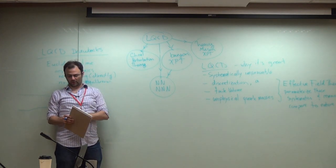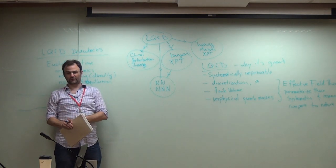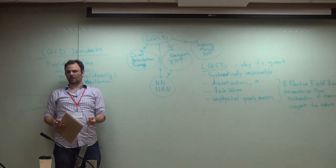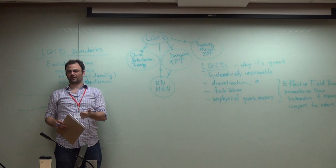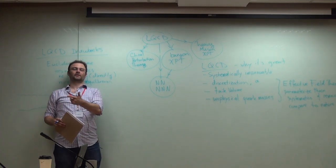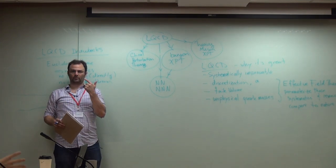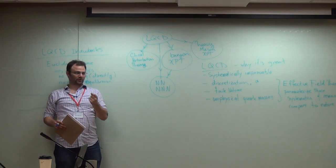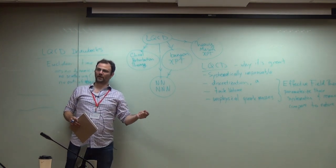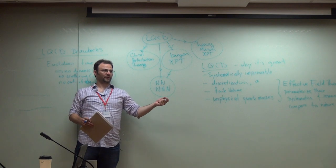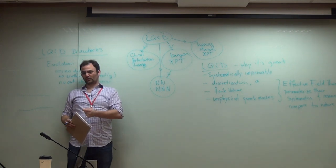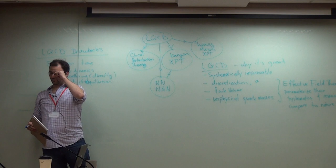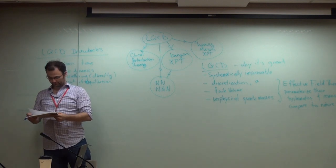These days, this is becoming a pretty exciting thing because computing power has finally gotten to the point where you can do calculations at the physical pion mass and actually make predictions, not post-dictions. The lattice has actually been used to predict a number before it was measured experimentally, and the experiment found the lattice calculation was correct. That happened for the first time just a few years ago.